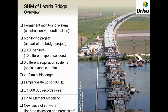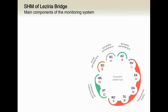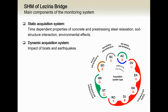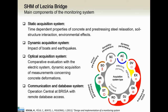A brief overview about this monitoring system. There are many measurements, and we can look at this from a different perspective. There is a static acquisition system mainly designed to follow the time-dependent properties of concrete and the prestress in steel. There is also a dynamic acquisition system, complementing the static one, devoted to assessing the impact of bolts and earthquakes. There is an optical acquisition system to compare with the static system and assess the evaluation of both. Finally, there is a communication and database system that transfers all collected data to the bridge owner for consultation and processing.